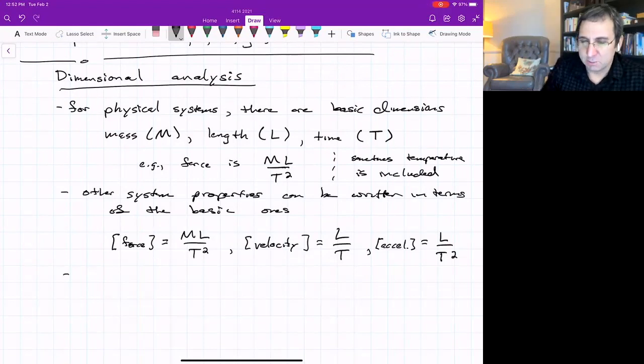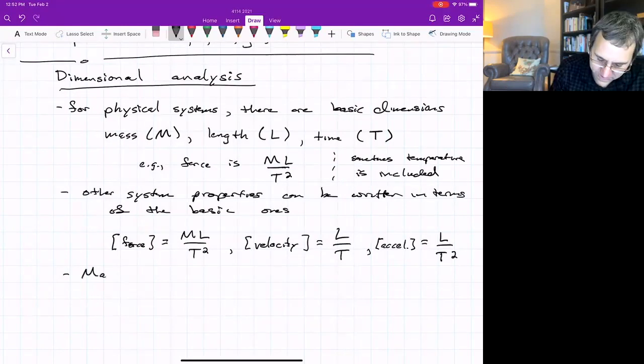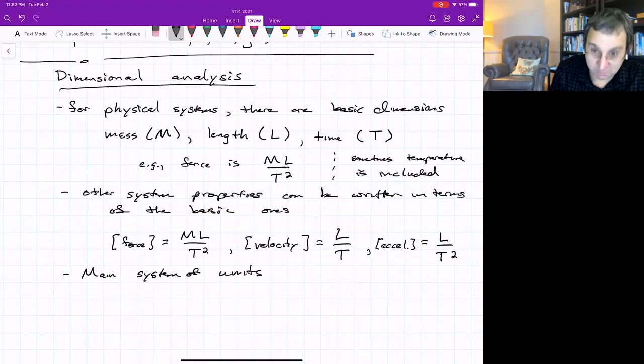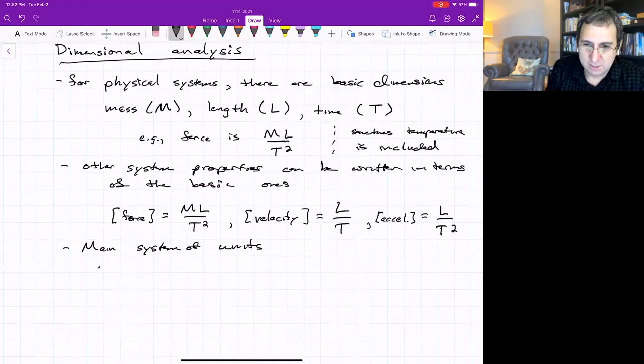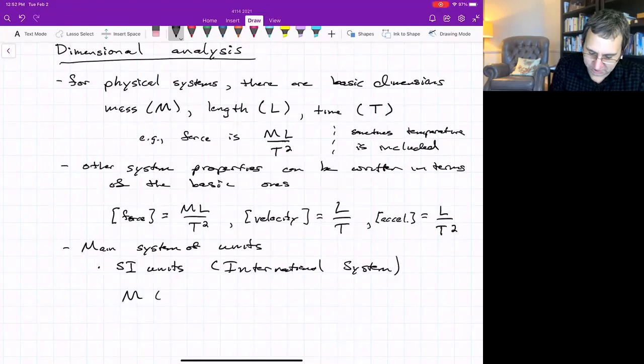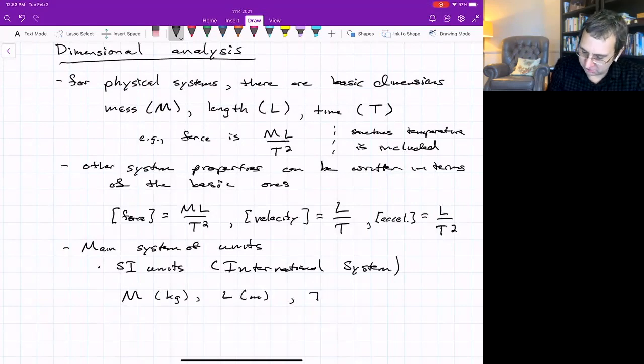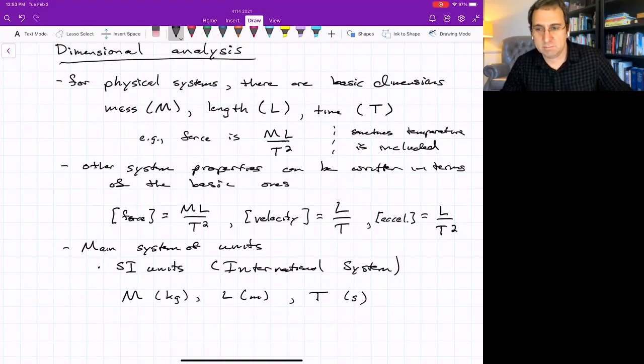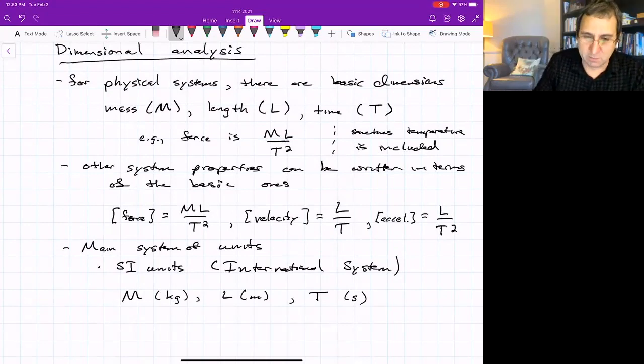We need to distinguish units and dimensions. I'm just going to talk about the main system of units to be distinguished from dimension. And that's the system international SI units, or international system. We measure mass in kilograms, measure length in meters, time in seconds, and degrees in Kelvin.